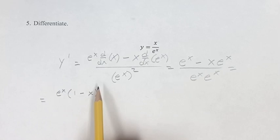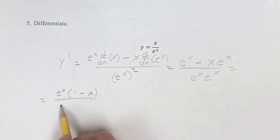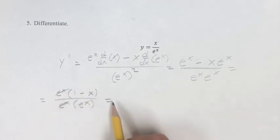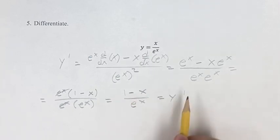So e to the x times 1 minus x equals e to the x minus x e to the x, all over e to the x times e to the x. Canceling out one e to the x, we get 1 minus x over e to the x, and that is your derivative.